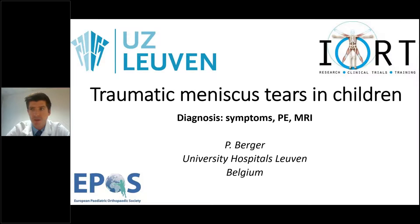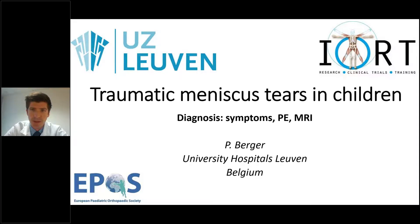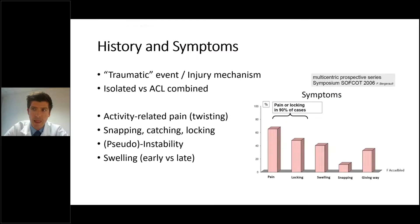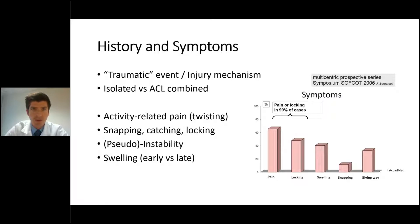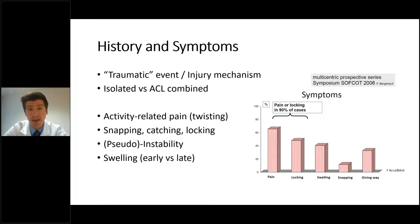Thank you, Stefan. Over the next five minutes, I'd like to take you through the key points in diagnostics, physical examination and MRI of traumatic meniscal tears in children. A meniscal tear will most often be suspected with a history of a traumatic event; isolated tears of the meniscus are typically the result of rotation and deflection. We should suspect concomitant meniscal injury when an ACL tear is present, being aware of hidden meniscal lesions like ramp lesions and root tears. Most common symptoms are activity-related pain and mechanical complaints such as locking or snapping; other common complaints are swelling and instability.